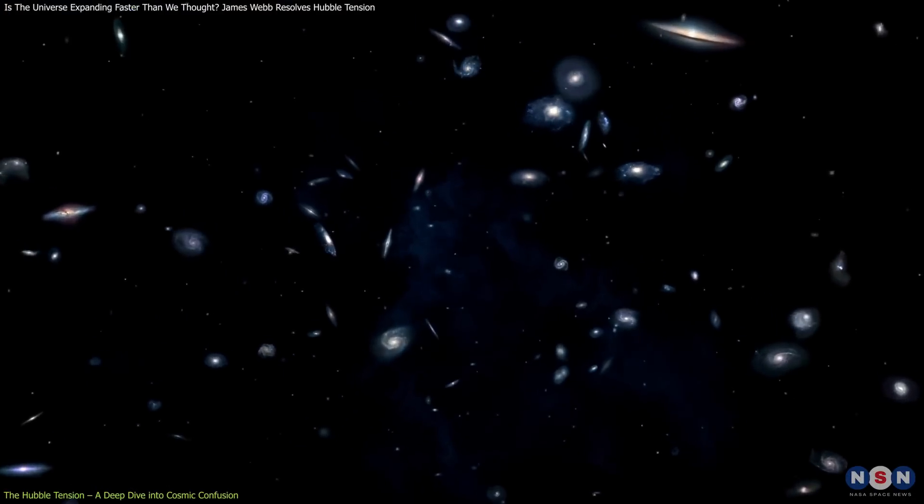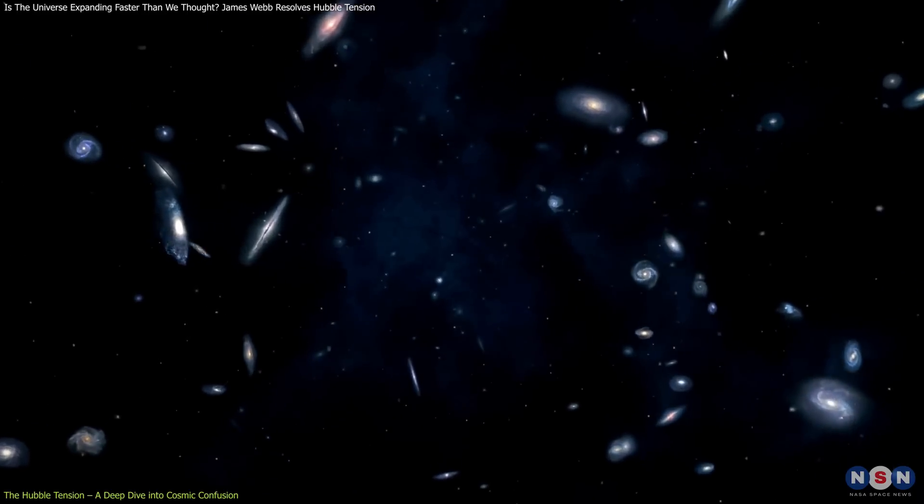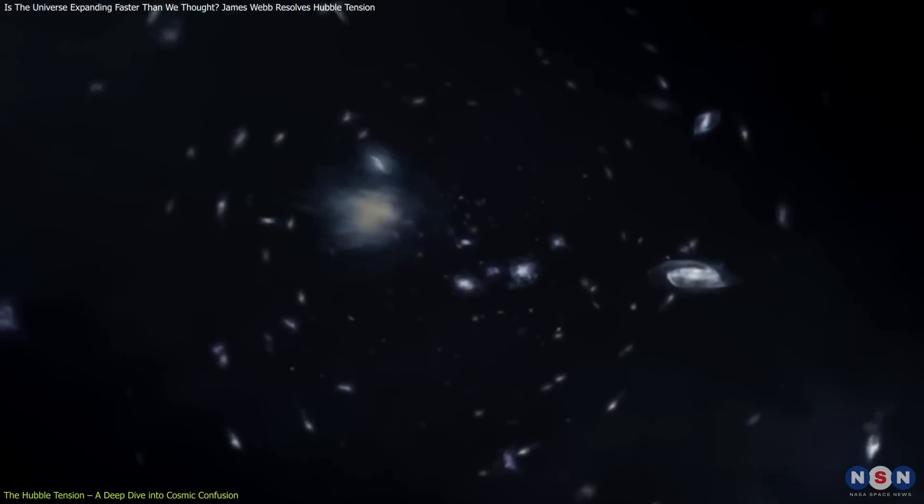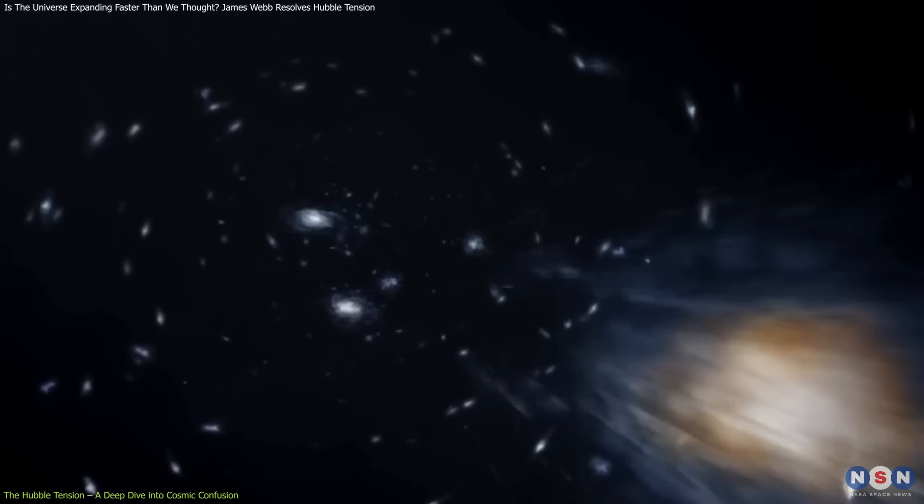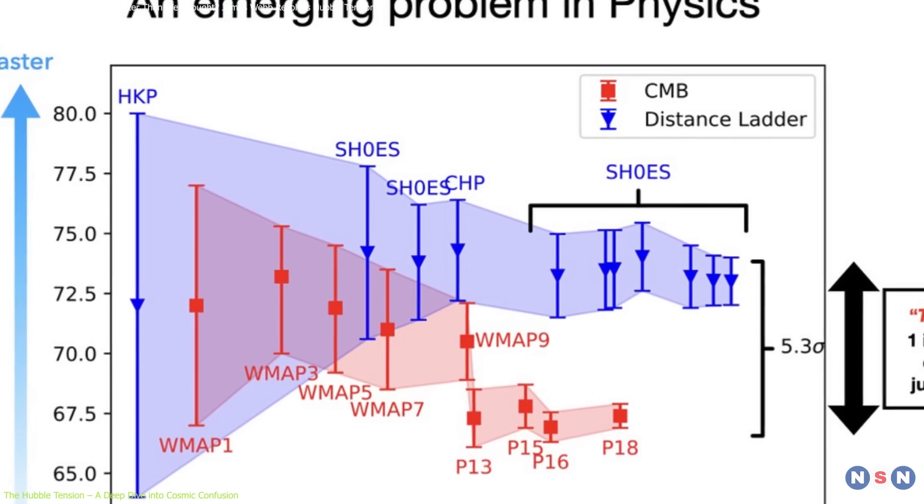The second method focuses on more recent cosmic history by observing the expansion rate of nearby galaxies. By calculating their distances and recession velocities, astronomers derive a higher Hubble constant, roughly 74 kilometers per second per megaparsec.